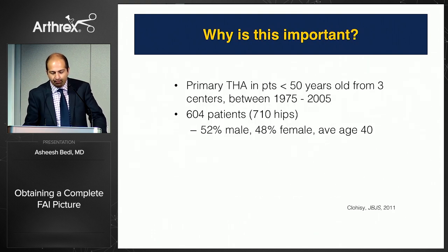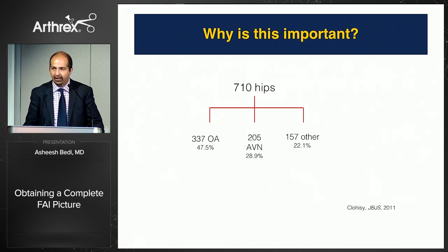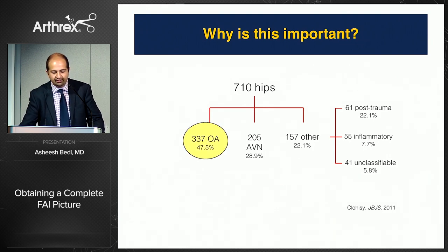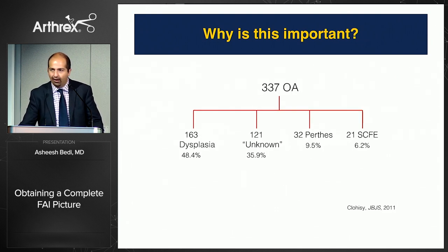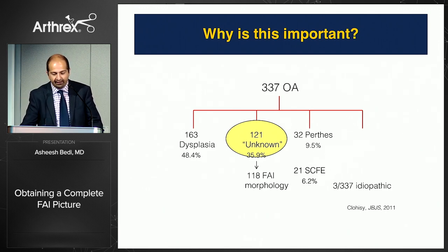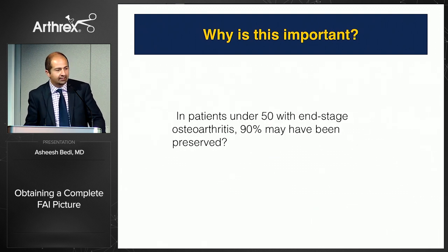John Clohisy published a collective series of patients who had hip replacement under age 50. Breaking down the primary OA group: 163 had dysplasia and 121 were labeled unknowns. When you look at those unknowns in more detail, those were FAI — slipped epiphyses look like FAI too. Grouping dysplasia and impingement together, over 90% of these hips had a reason for a young hip replacement, suggesting that if we had intervened at a young age, we might have saved that joint.